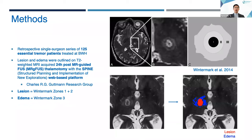Our cohort included 125 essential tremor patients treated by Dr. Reese Cosgrove at Brigham and Women's Hospital. We collected T2-weighted MR images 24 hours post-treatment for all patients. We then used a web-based platform called Spine, developed by Dr. Charles Grootman's group, to outline lesion and edema. A paper by Wintermark et al. established the radiographic features of FUS.